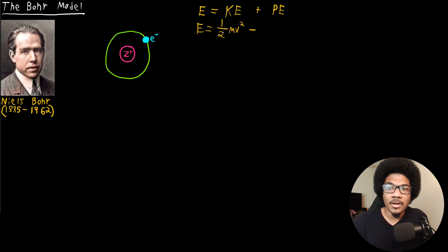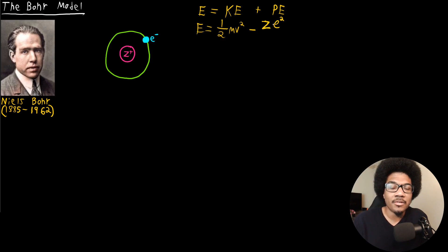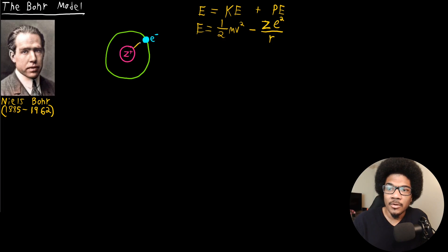The potential energy is going to come from the Coulombic attraction between these two oppositely charged particles — the positively charged nucleus and the negatively charged electron. That's going to be a ratio of the two charges: Z for the nucleus charge and E squared for the electron charge, over R, the distance between the nucleus and the electron.